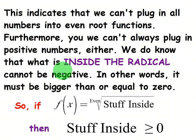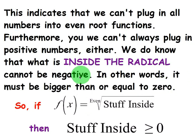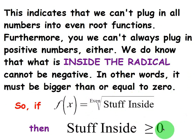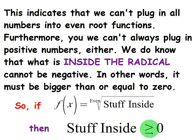What is inside the radical cannot be negative — in other words, it must be greater than or equal to 0. To find the domain of an even root function, you take what's inside the radical, set it greater than or equal to 0, and solve. It's that simple, because we want to ensure that the radicand is not negative.